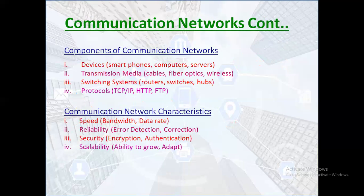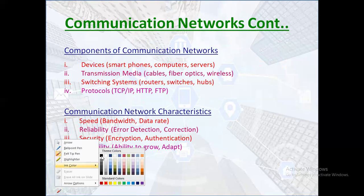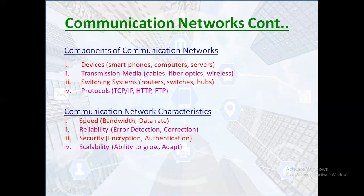There are various components in communication networks. The main devices used are smartphones, computers, and servers. The transmission media includes cables, fiber optics, and wireless. The switching systems are routers, switches, and access points. The protocols used in communication networks are TCP/IP, HTTP, and FTP, etc.